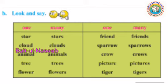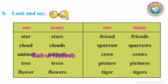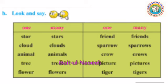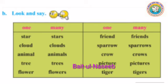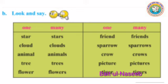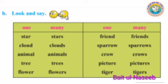अब यहाँ पर देखें बेटा — एक column दिया हुआ है जिसमें लिखा है 'one and many'। तो star का many में हो जाएगा 'stars', cloud का 'clouds' — आपको 's' लगाकर लिखना है। Animal का हो जाएगा 'animals', tree का 'trees', flower का 'flowers'।